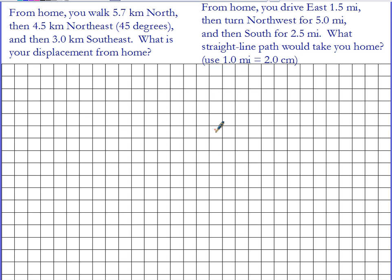Let's consider a couple of examples to show you how to apply the rules for graphical addition of vectors. From home, you walk 5.7 kilometers north, then 4.5 kilometers northeast, and then 3 kilometers southeast. I'd like to know the displacement from home.